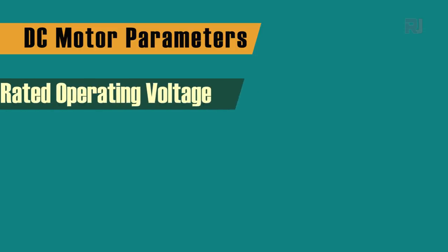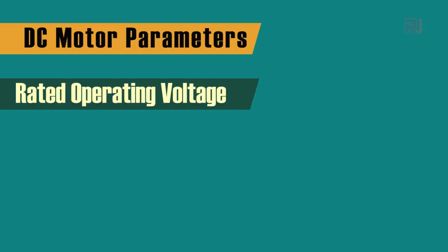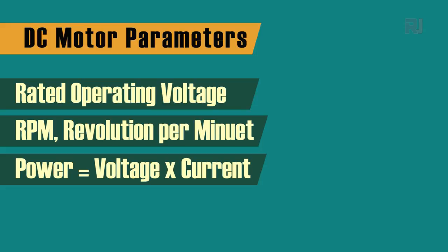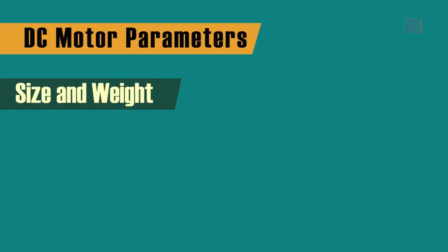There are certain parameters to consider — for example, the rated operating voltage at which the motor operates, the RPM (revolutions per minute) indicating how fast it runs — some motors run at 500 RPM, others at 15,000 RPM depending on the application. The power is most important because it is the product of voltage and current, and you must pick one that fits within your system's operating voltage.